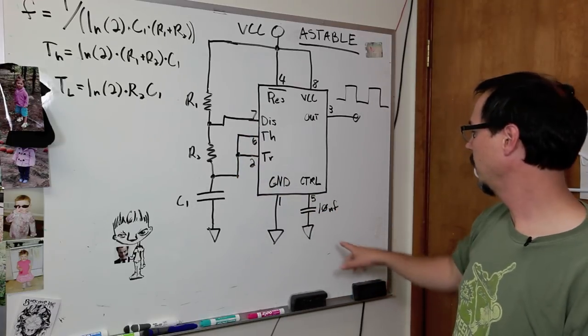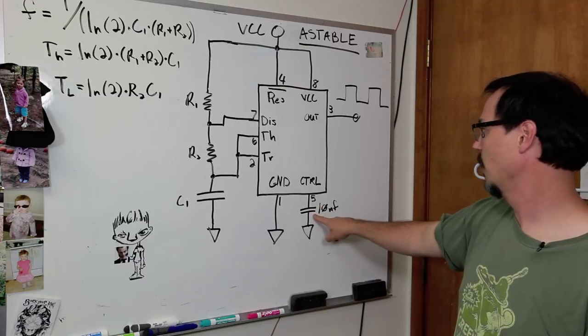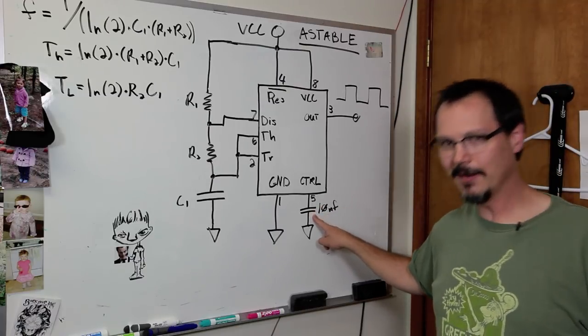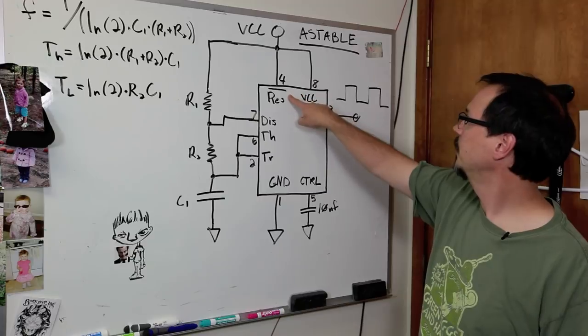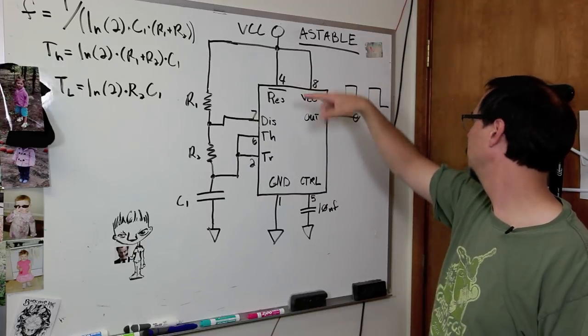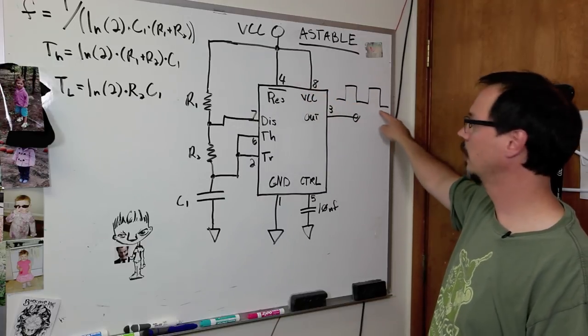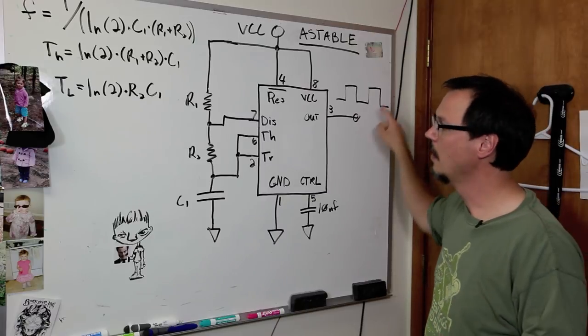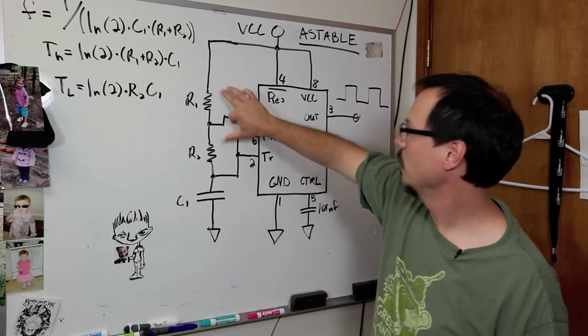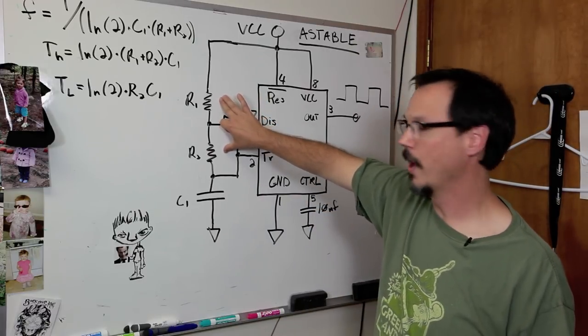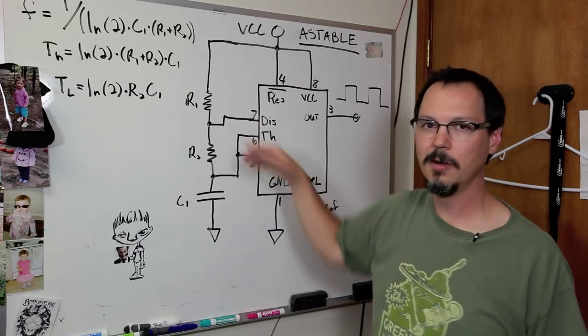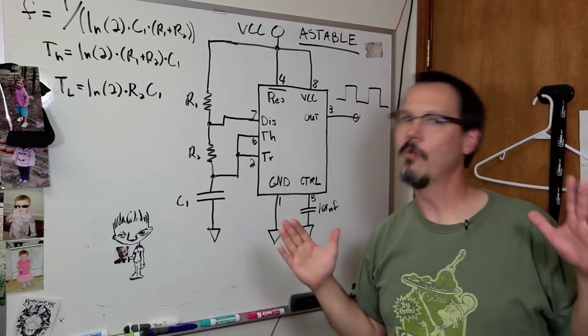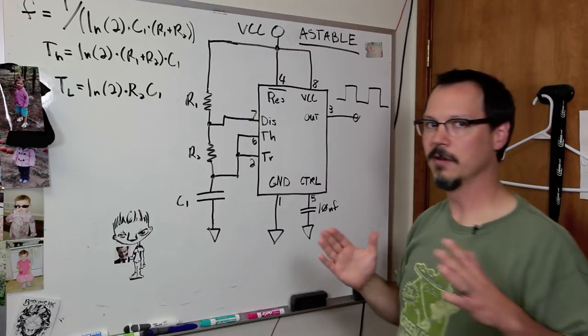Again, like the other configuration, you want to tie or decouple your control line. Not mandatory. Good idea, though. The reset line is pulled high. VCC is there. Output is going to look like a square-ish wave. But you can already see, if you're charging through R1 and R2 one way, and then discharging just through R2, this is not going to be a square wave. It's going to have a little bit different duty cycle than 50-50.